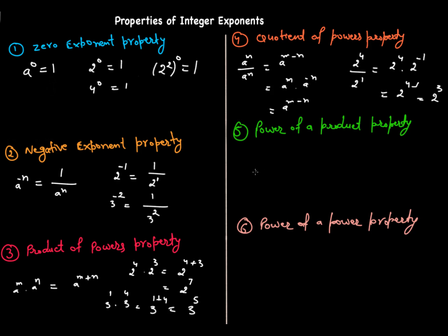The fifth property is the power of a product property. If you have a multiplied by b, all raised to power n, you separate the exponent onto both numbers: a raised to power n times b raised to power n. For example, two multiplied by four, all raised to power three, equals two raised to power three times four raised to power three. You can simplify: two cubed is eight, four cubed is sixty-four, and eight times sixty-four gives you the answer.